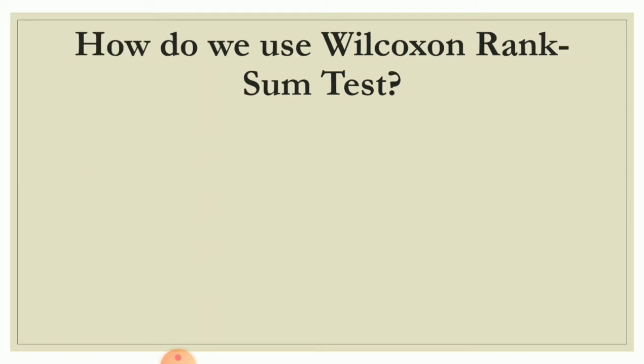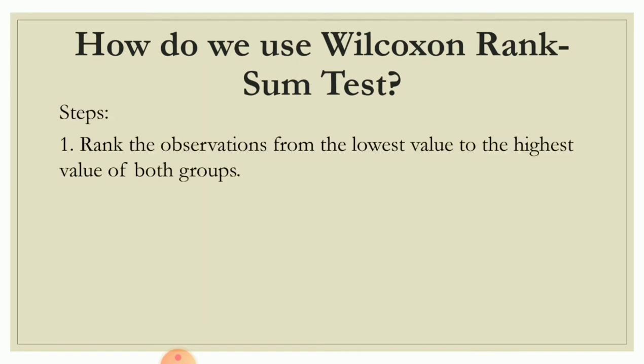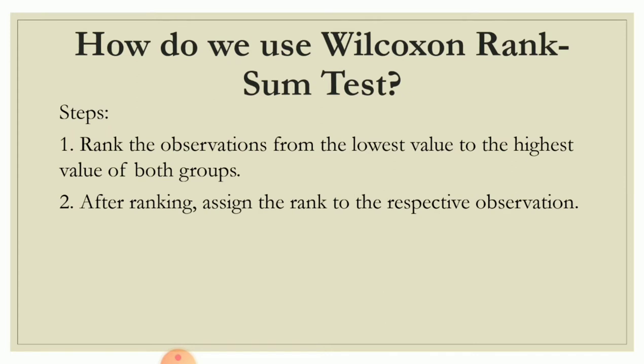How do we use the Wilcoxon rank sum test? We have steps to follow. First, rank the observations from the lowest value to the highest value of both groups. Second, after ranking, assign the rank to the respective observation.